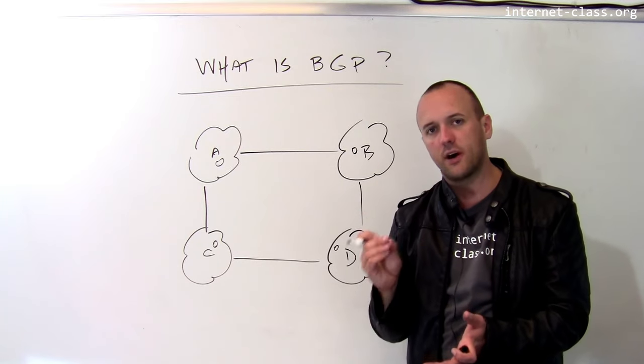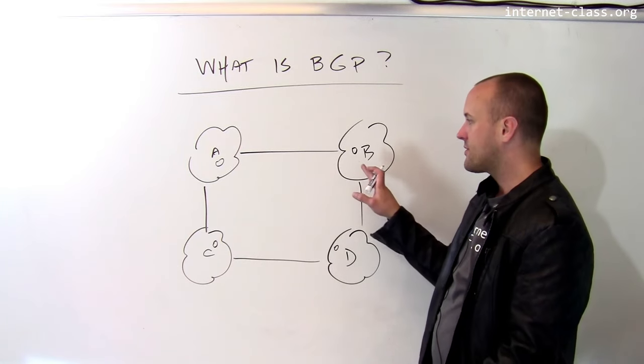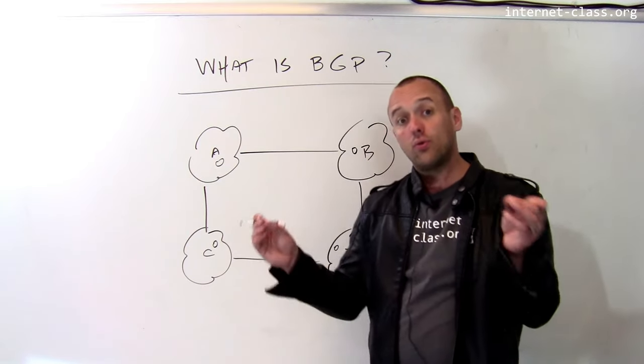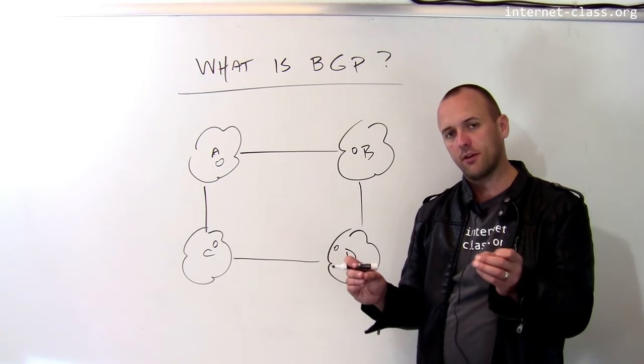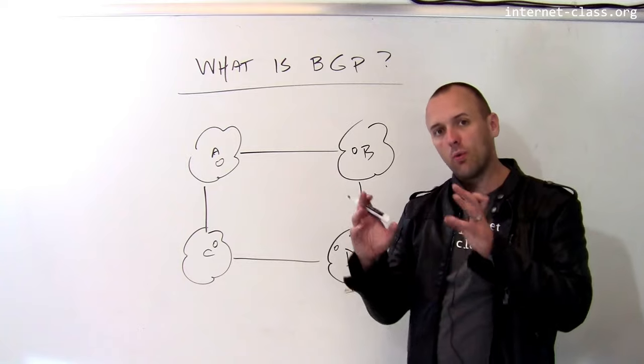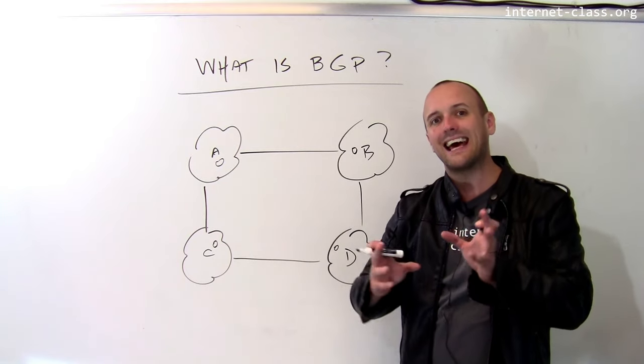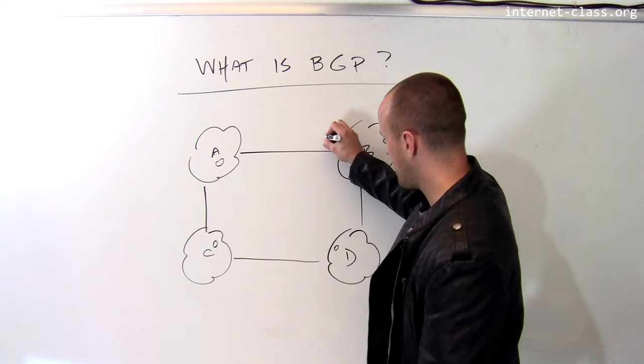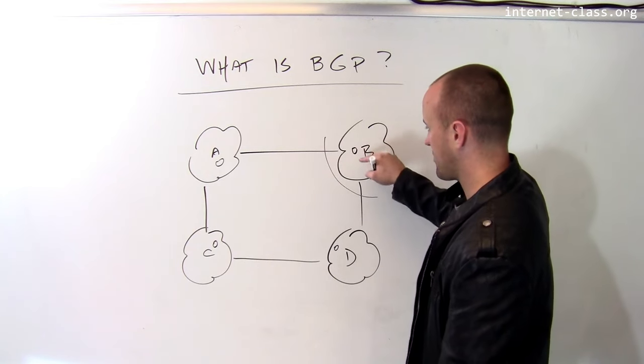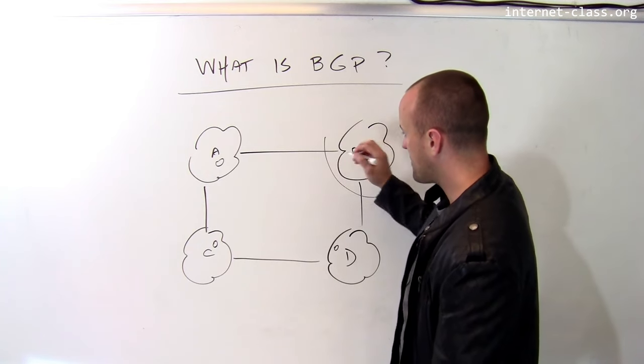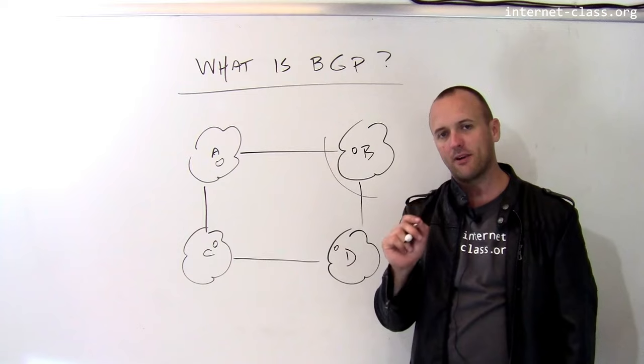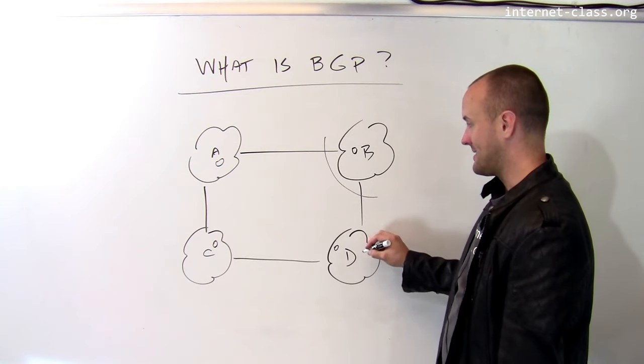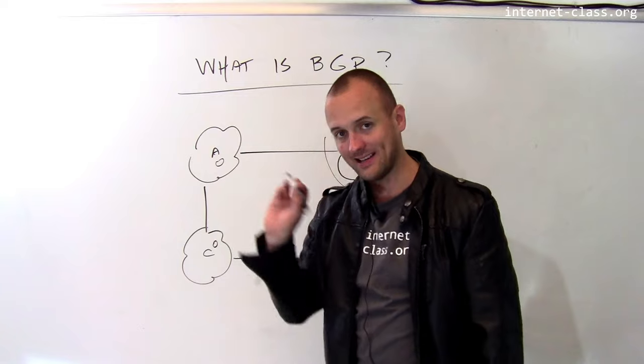And the Border Gateway Protocol has two functions. First of all, it allows the autonomous systems on the internet to figure out who they can communicate with. So it has to do with reachability. What hosts on the internet can I send packets to? And it also helps this particular router, let's say we're starting at autonomous system B, it helps it make this fundamental choice that that router has to make over and over again, which is should I send the packet to D or should I send the packet to A?